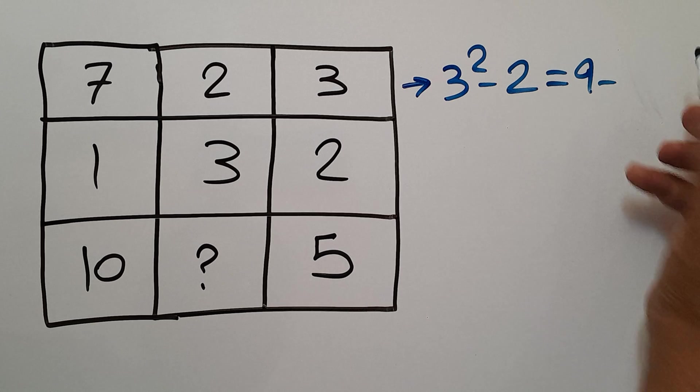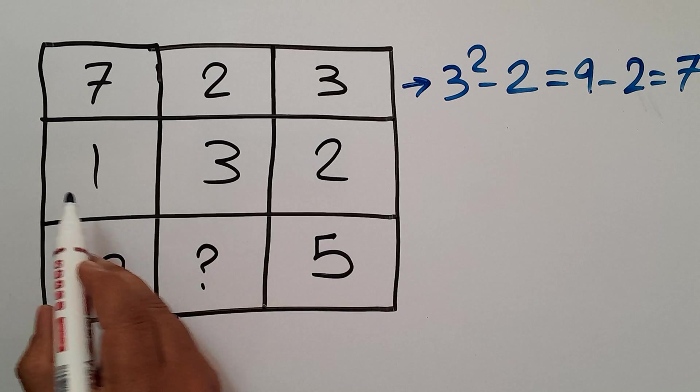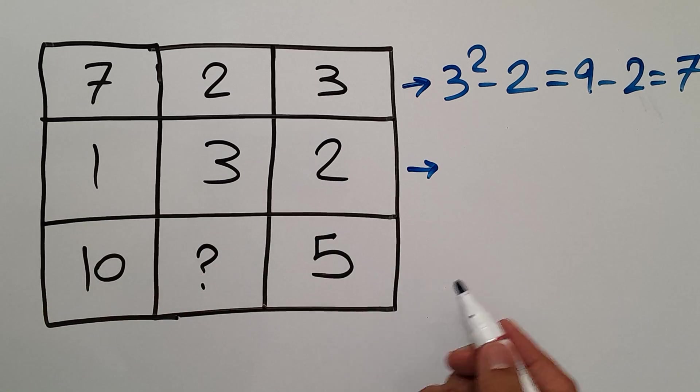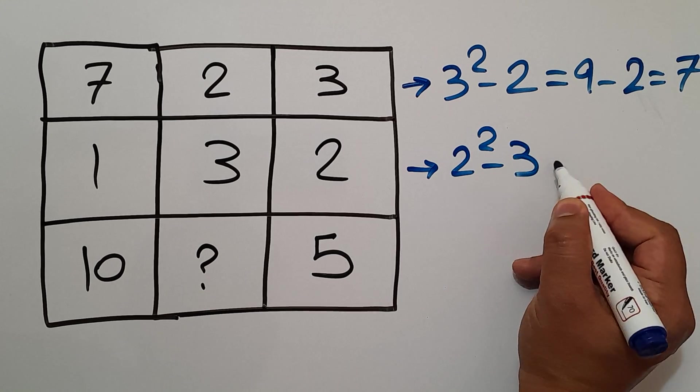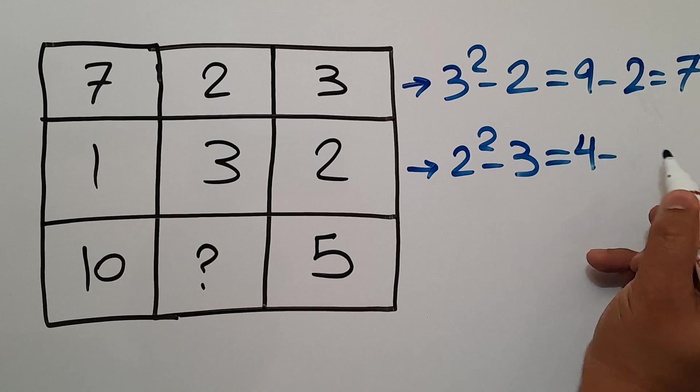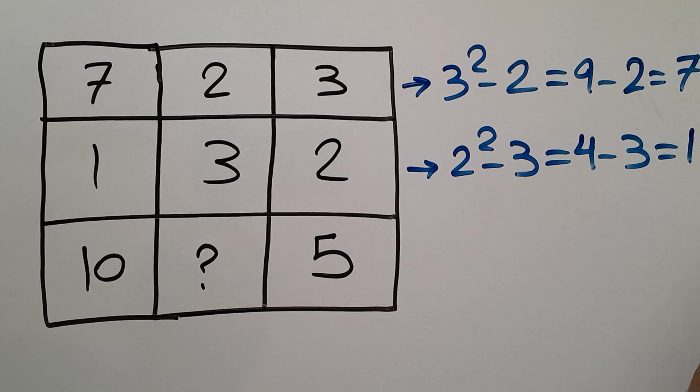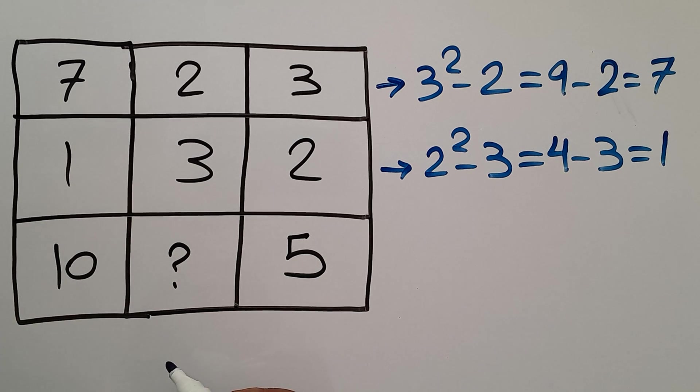And in the second row we have 1, 3, and 2. 2 squared minus 3 equals 4 minus 3, which equals 1, the first number. So the pattern that exists here is the square of the third number of each row minus the second number gives us the first number.